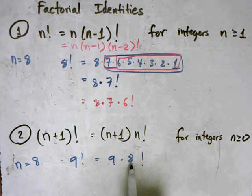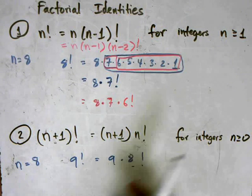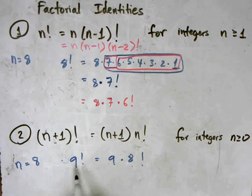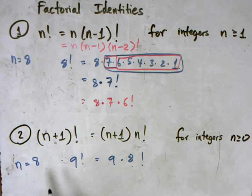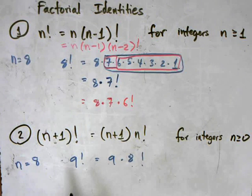n plus 1 is 9, n is 8, and that fits the description. Because 9 factorial is really 9 times 8 times 7 times 6 times 5 times 4 times 3 times 2 times 1.